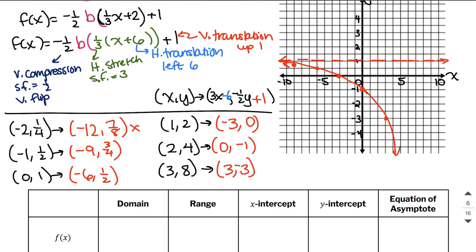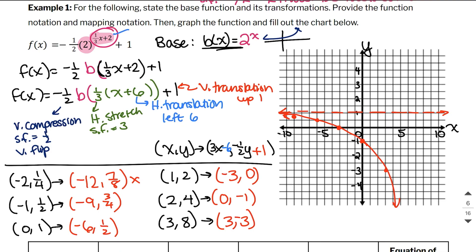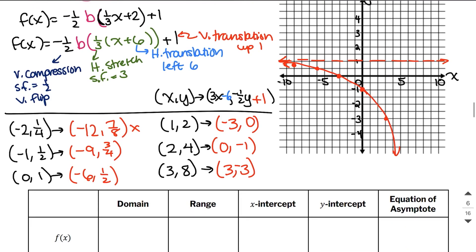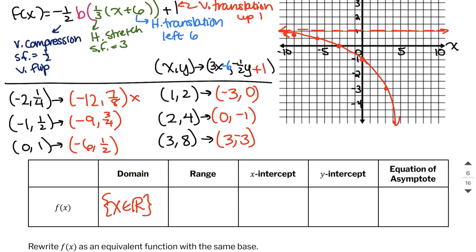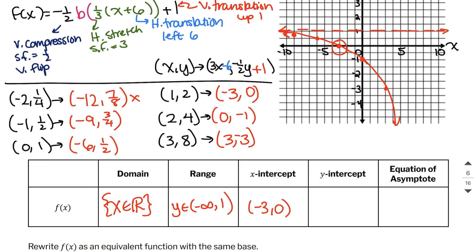Now let's fill out the information. The domain — no matter what my x values are, I can always input any value, so the domain is X as an element of all the reals. The graph continues in both directions, so X can be anything. The range goes from negative infinity and ends at 1 — it will never touch 1, so I'll use an open bracket in interval notation. There is an x-intercept at (−3, 0) — with transformations, the graph can now have x-intercepts. There's a y-intercept at (0, −1). And the equation of the horizontal asymptote is y equals 1.